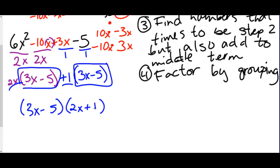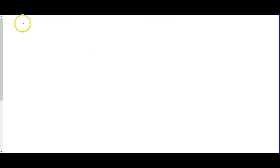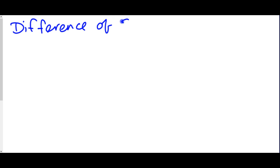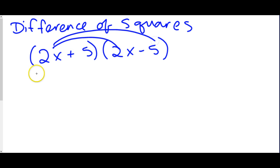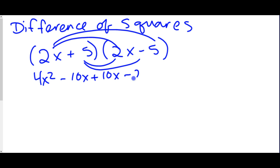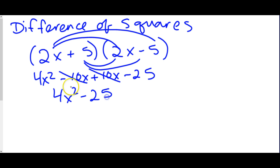There are quite a few ways to factor, and we're still not done. Next is called difference of squares. This is specifically used when you have two parentheses that almost match exactly, except one has a plus and one has a minus sign. If we FOIL this out: 2x times 2x is 4x², 2x times negative 5 is negative 10x, 5 times 2 is 10x, and 5 times 5 is negative 25. The 10x terms cancel, leaving us with 4x² - 25.